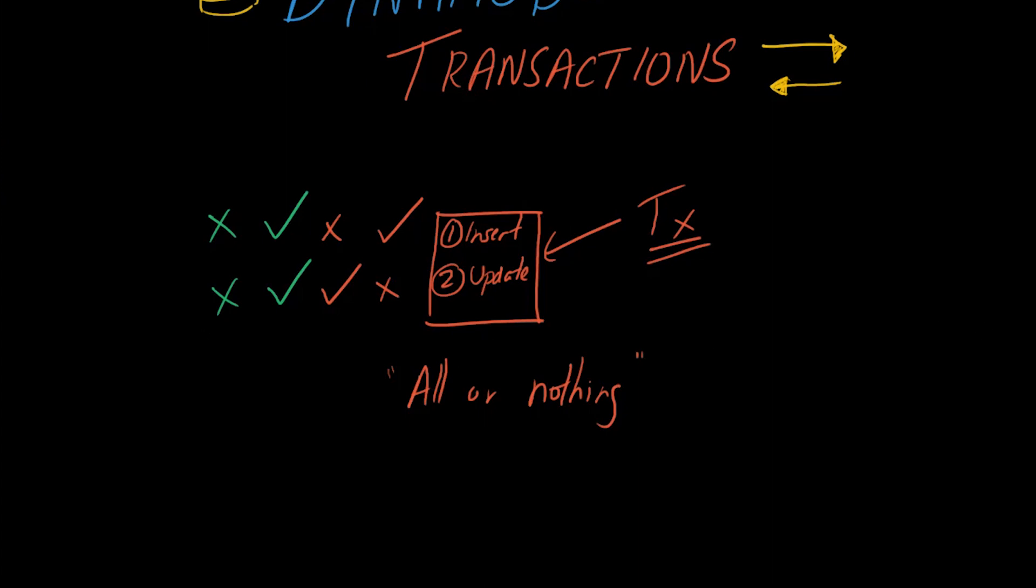With this new transactions feature, you get access to two new APIs or two new operations that you can use on your table. The first one is called TransactGetItems, and the second one is called TransactWriteItems.